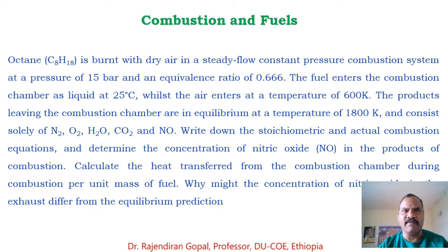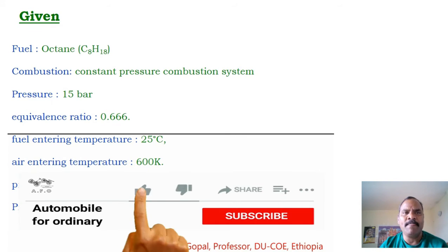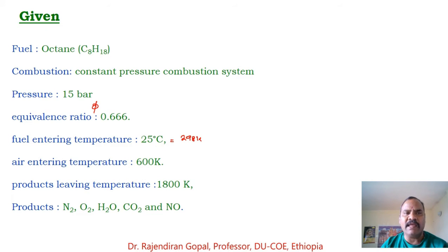Given data: the fuel is octane C8H18. The combustion process is a constant pressure combustion system. The pressure is 15 bar and the equivalence ratio φ is equal to 0.6. Fuel entering temperature is 25 degrees Celsius, which is 298 Kelvin, air entering temperature is 600 Kelvin, and the products leave at 1800 Kelvin.